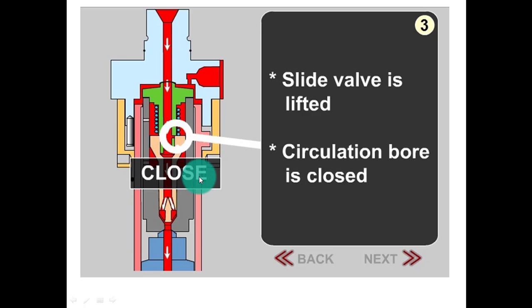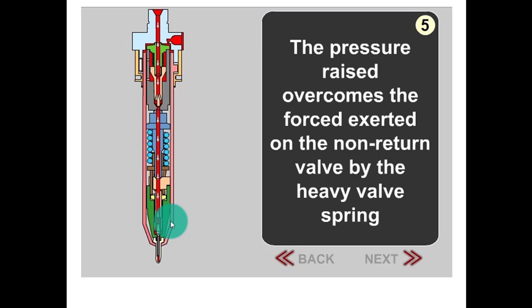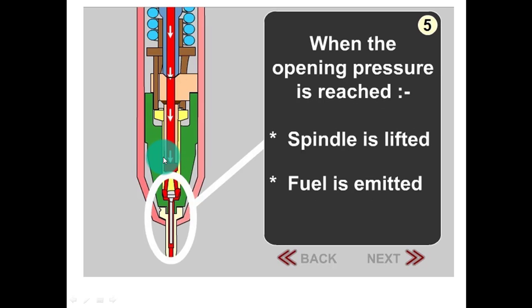After that, fuel flows to the spindle guide. The pressure rise overcomes the force exerted on the non-return valve by the heavy valve spring. When the opening pressure is reached, spindle is lifted and fuel is emitted.